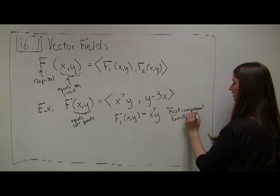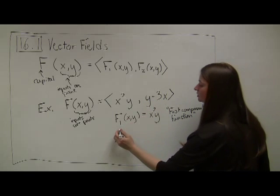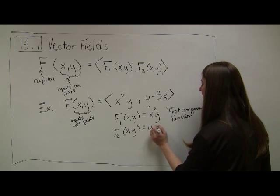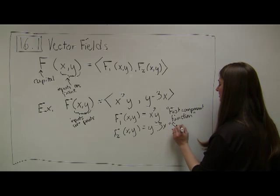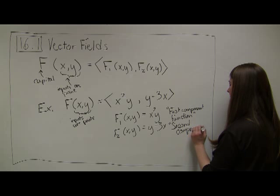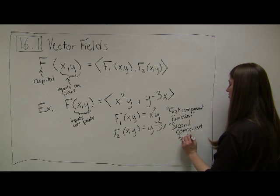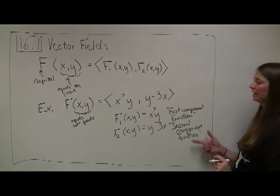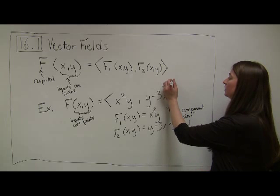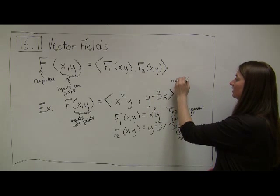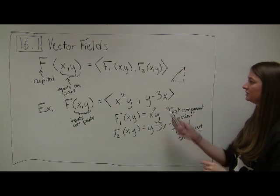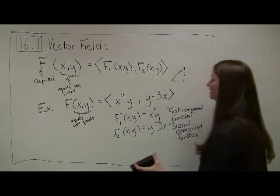Similarly, our second component function, f2, is also a function of x and y. And it's given by y minus 3x. So I plug in a point, and what do I get out? I get out a vector. This part of the component is telling me how far I'm going over in the x direction. This part is telling me how far up I'm going in the y direction. And it makes a tip-to-tail vector.